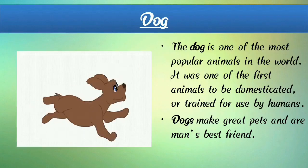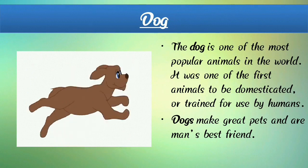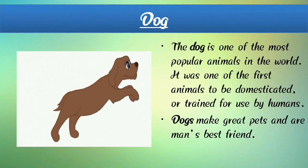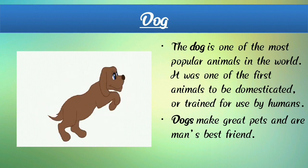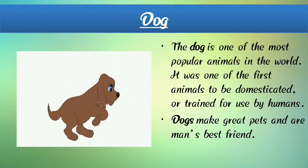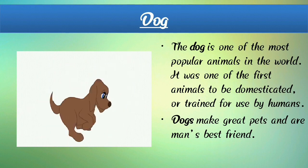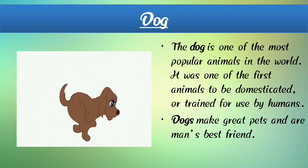Now next, dog — D-O-G. Here we can see a photograph of a dog. You are all familiar with dogs. Dog is one of the most popular animals in the world and was one of the first animals to be domesticated or trained for use by humans. Dogs make great pets and are man's best friend. A dog has 4 legs, 2 ears, 2 eyes, 1 mouth, and 1 tail. A dog is a very faithful animal, so we all become as faithful as a dog.